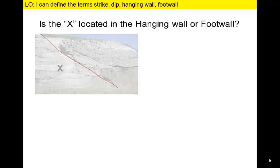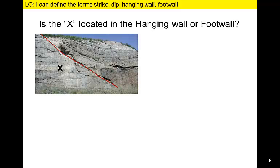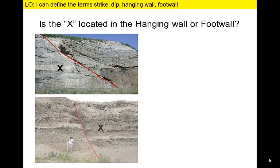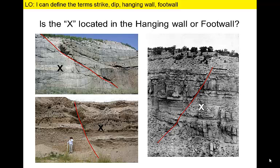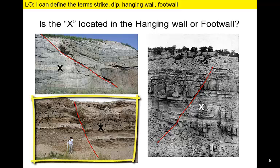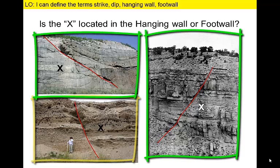Here are three images of faults, with the faults indicated by the red lines. Can you identify the hanging wall and foot wall for these three faults? Notice that X is only above the fault, or in the hanging wall, for one image, and it is in the foot wall below the fault in both of the other images.